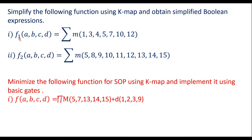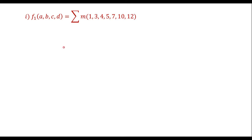Let's consider the first case, function F1. The expression is F1(A,B,C,D) = Σm(1,3,4,5,7,10,12). These are the min terms given and we need to simplify this expression. Since there are four variables, we need a four variable K-map.